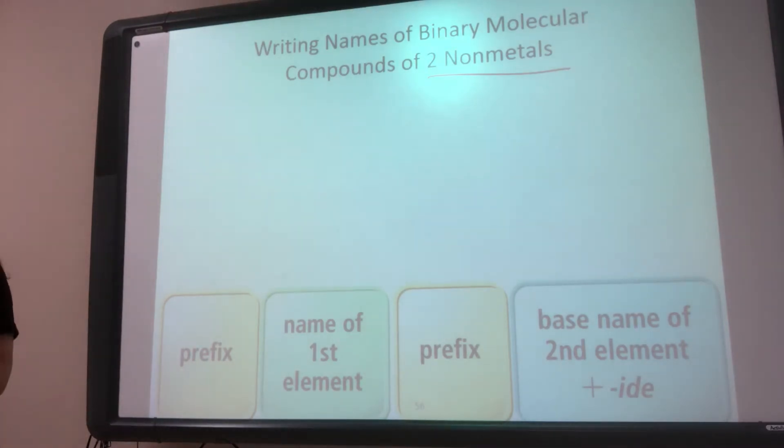You'll have two non-metals, and the first thing you're going to do is write the name of the first element. This is going to be the full name - there's no shortening or ending for this one. It's just the full name of whatever the first element is.